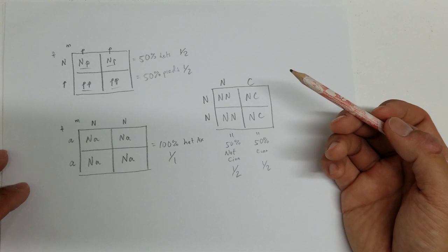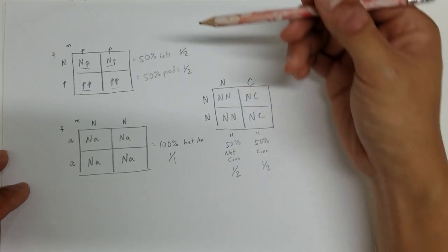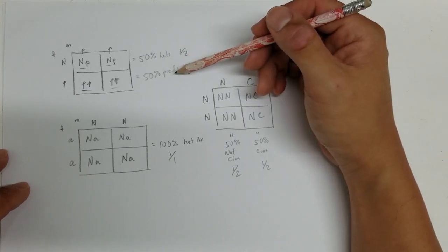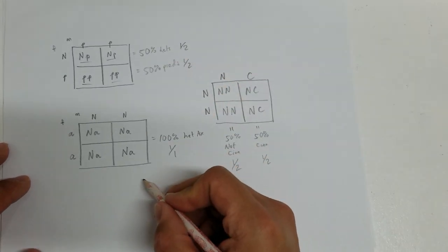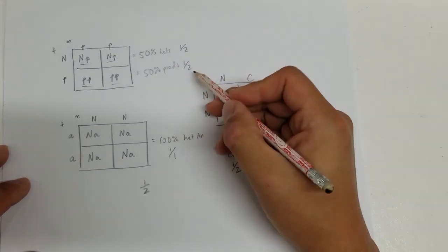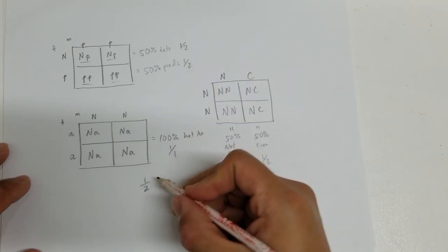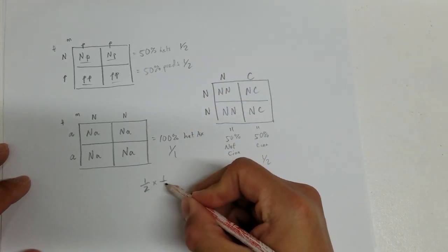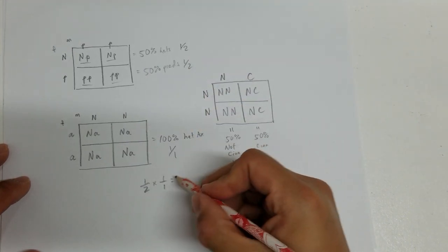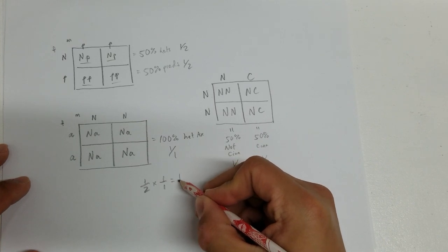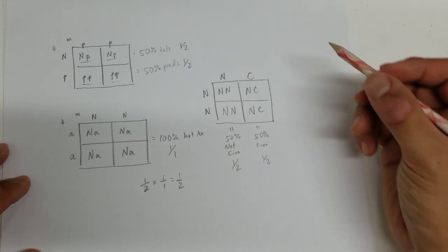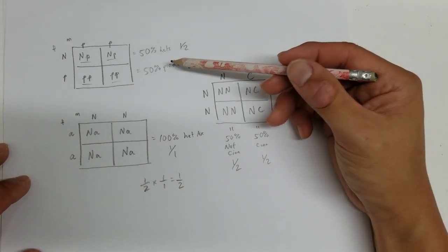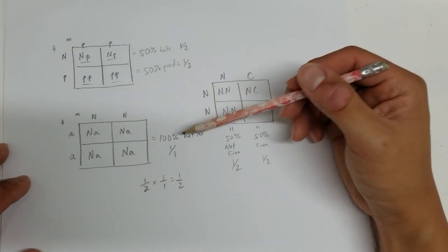So now, if we want to figure out the chances of getting a pied that is het for xanthic, we would just multiply the pied, which is 1 half, times 1 over 1, which we still get as 1 half.